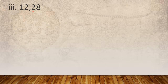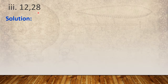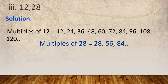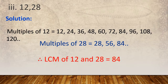Question number 3: Find the LCM of 12 and 28. Solution: Multiples of 12: 12, 24, 36, 48, 60, 72, 84, 96, 108, 120. Multiples of 28: 28, 56, 84, and so on. Students, here you can see the lowest common multiple is 84. Therefore, LCM of 12 and 28 is equal to 84.